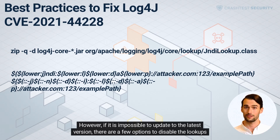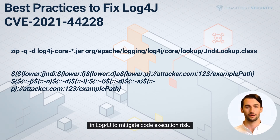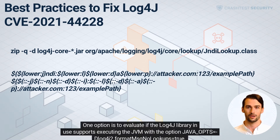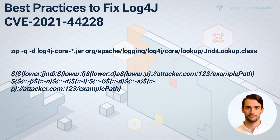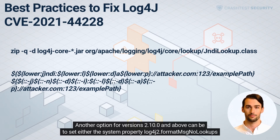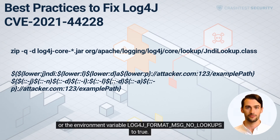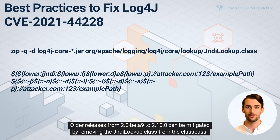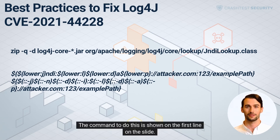However, if it is impossible to update to the latest version, there are a few options to disable lookups in Log4j to mitigate code execution risk. One option is to execute the JVM with the option: JAVA_OPTS=-Dlog4j2.formatMsgNoLookups=true. This disables the lookup functionality to remote servers and should work for versions starting at 2.10.0. Another option for versions 2.10.0 and above is to set either the system property log4j2.formatMsgNoLookups or the environment variable LOG4J_FORMAT_MSG_NO_LOOKUPS to true. For older releases from 2.0 beta 9 to 2.10.0, the vulnerability can be mitigated by removing the JndiLookup class from the classpath. The command to do this is shown on the first line on the slide.